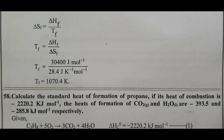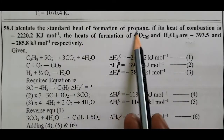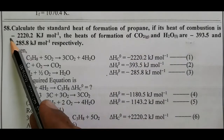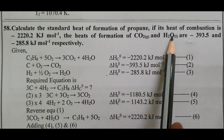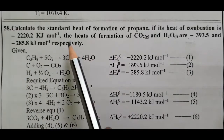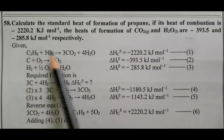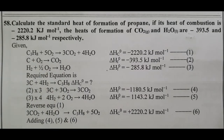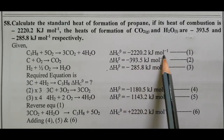Question number 58: The enthalpy of combustion of propane is minus 2220.2 kilojoule mole power minus 1. The heats of formation of carbon dioxide and water are minus 393.5 and minus 285.8 kilojoule mole power minus 1 respectively. Propane molecular formula is C3H8; when burning in oxygen, carbon is converted to carbon dioxide and hydrogen is converted to H2O.